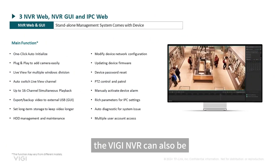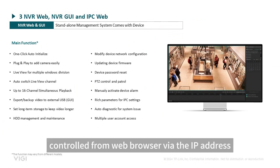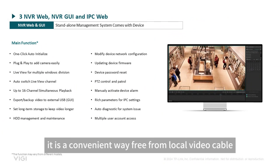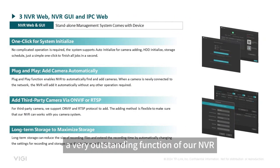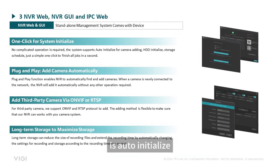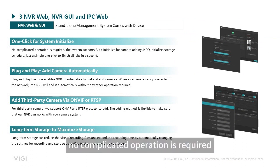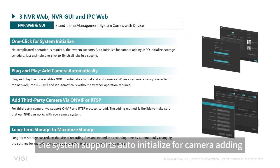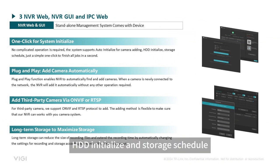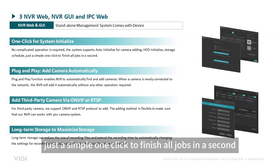The VG NVR can also be controlled from a web browser via the IP address — it is a convenient way free from local video cable. A very outstanding function of our NVR is auto-initialize. No complicated operation is required. The system supports auto-initialize for camera adding, HDD initialization, and storage schedule — just a simple one click to finish all jobs in a second.